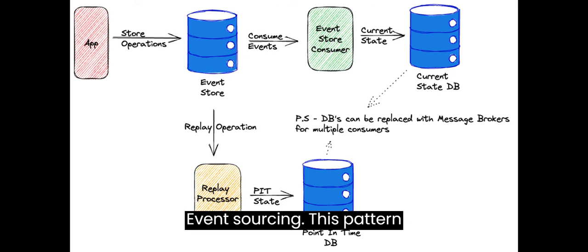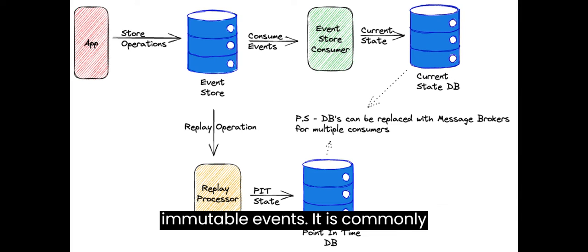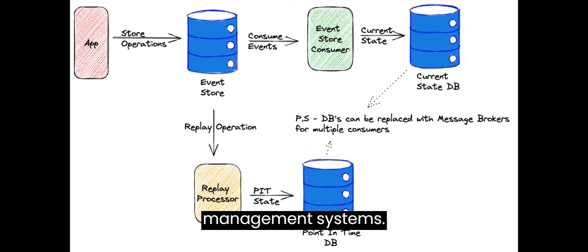Event sourcing: This pattern captures changes to data as a series of immutable events. It is commonly used in systems where auditing and traceability are critical, such as financial applications or content management systems.